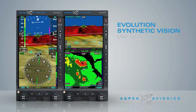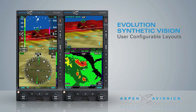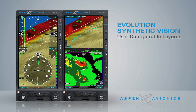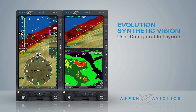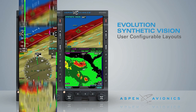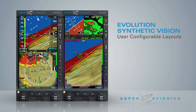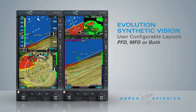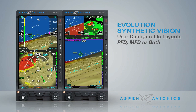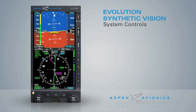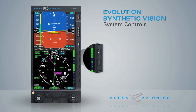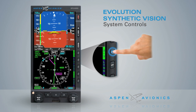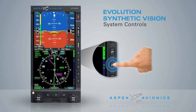Evolution Synthetic Vision can also be displayed in any of the available window configurations: full screen, split screen, or thumbnail layouts, and on the primary flight display, the multi-function flight display, or both. The Evolution Synthetic Vision option is accessed on the PFD by using the top hotkey to access the third menu level.